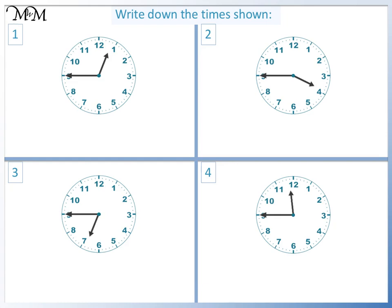Question one. The minute hand is pointing to nine, which tells us that it's quarter to. The next hour that the hour hand will reach is one. So the time is quarter to one.